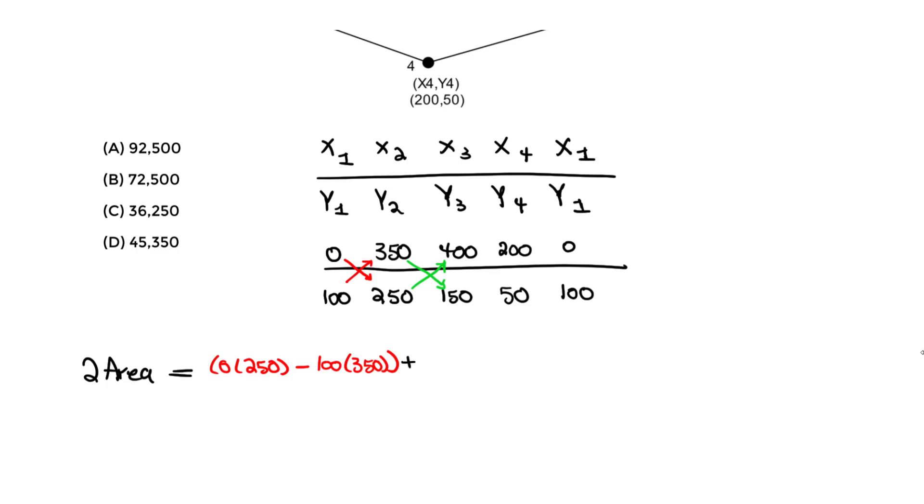Now we do the one in green. So we do 350 times 150 minus 250 times 400, close parenthesis. We move on to the next step. So we do 400 times 50 minus 150 times 200. And the very last one is going to be 200 times 100 minus 50 times 0.